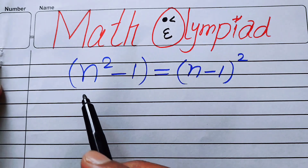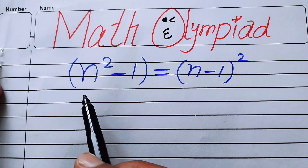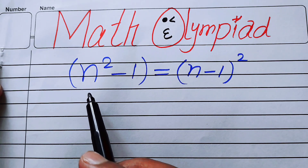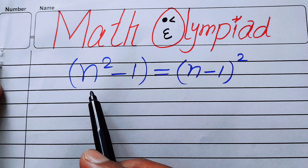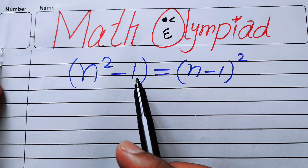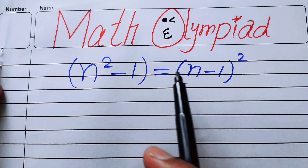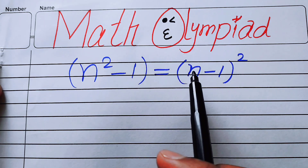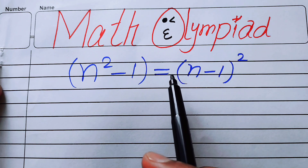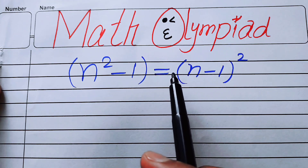Hello everyone, welcome back to the Map of Mathematics. In this video we are going to solve this nice algebra problem: n squared minus one is equal to n minus one whole squared. We will solve this problem for the values of n.